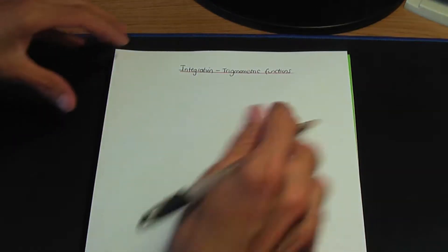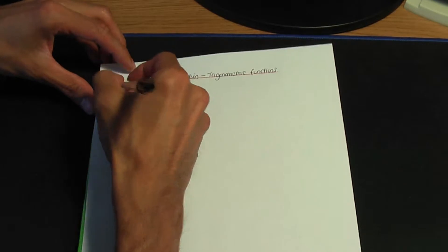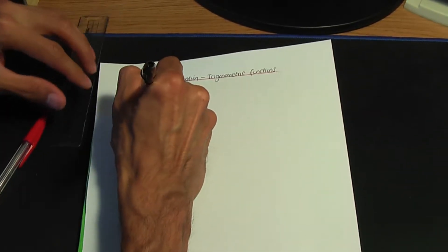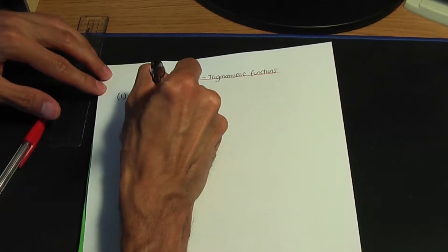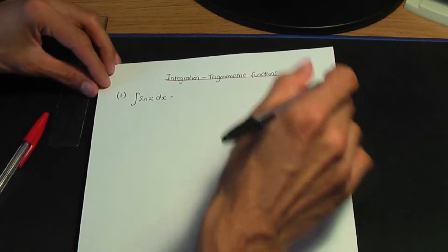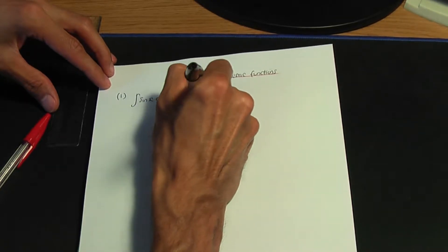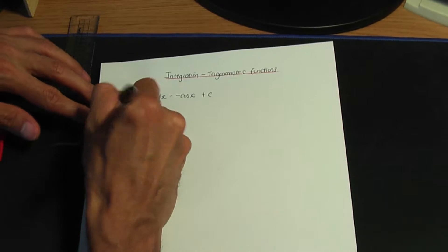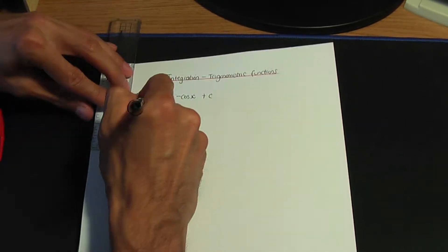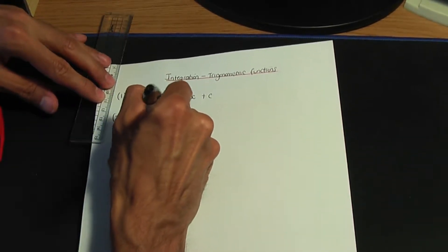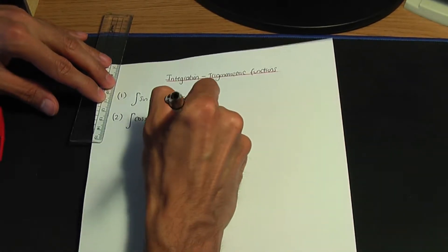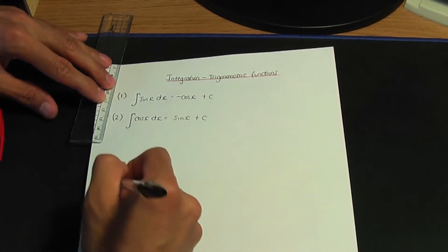First of all, let me quote the standard results and number them. Number one: whenever you integrate sin x with respect to x, the result is minus cos x plus c. Number two: if you integrate cos x with respect to x, the integration of cos is plus sin x plus c.